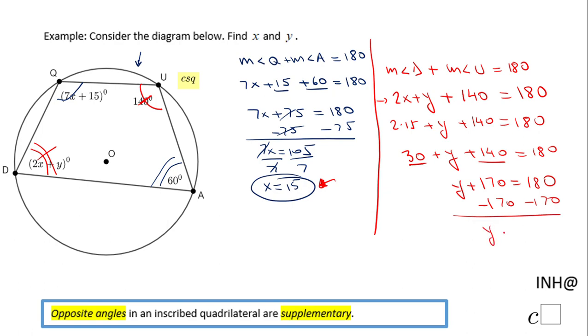For finding y, we just subtract 170 on both sides and we end up with y equals 10. Of course, you can take these values and plug them back in your expressions here and here and find the angles in case you need that.